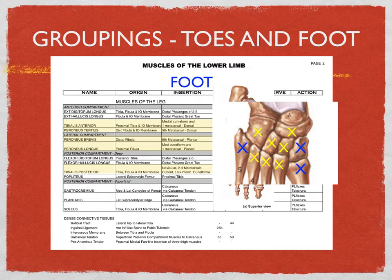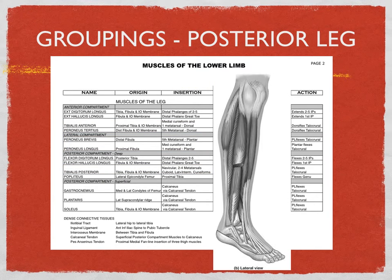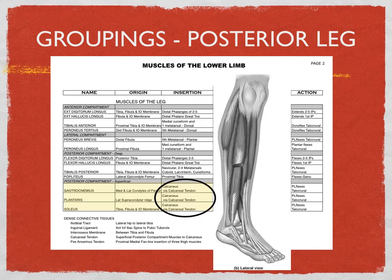Finally, the posterior part of the leg contains the big power muscles — the calf muscles. All three muscles here have the same insertion: they insert onto the calcaneus, the heel. These are the ones that drive you forward when you run or walk — they lift the heel, which in turn presses down the toes and drives you forward. Here's another group of three with a common insertion.